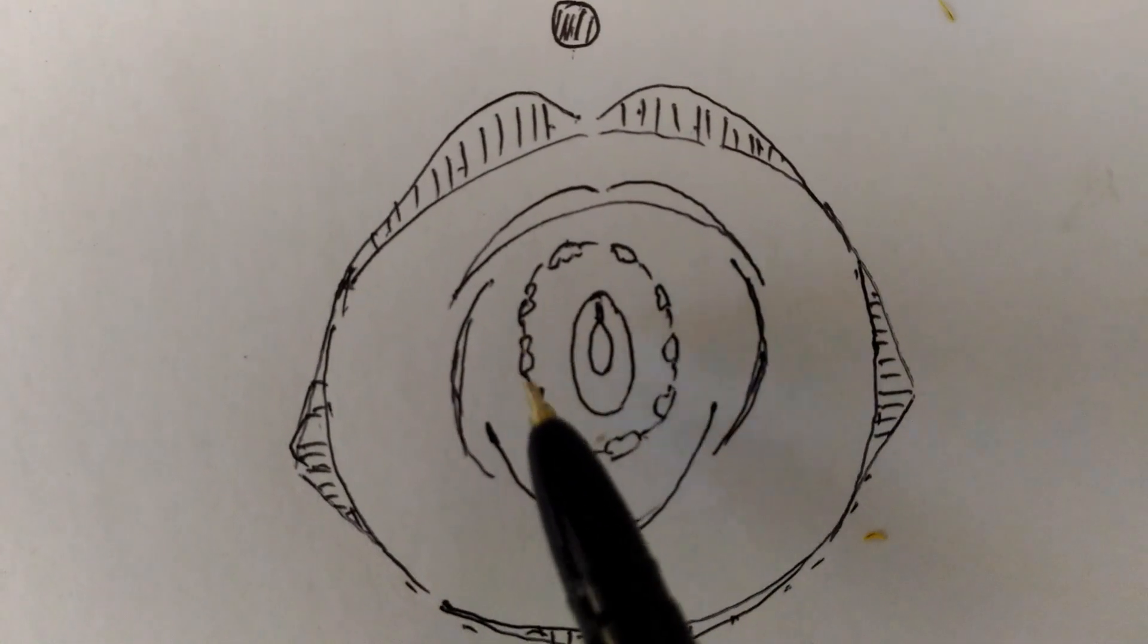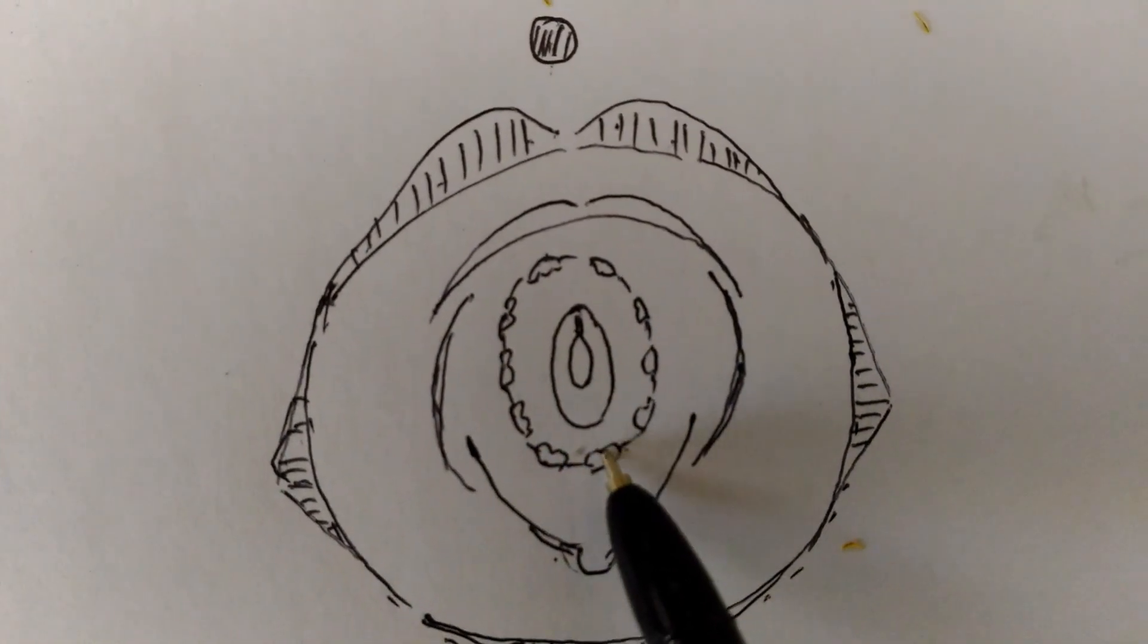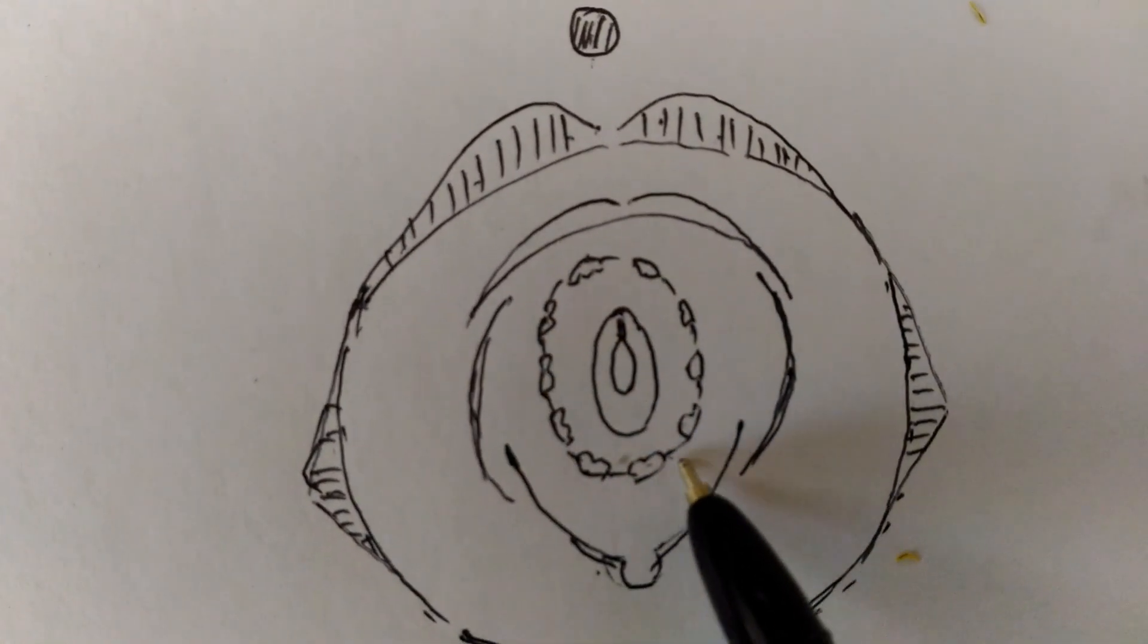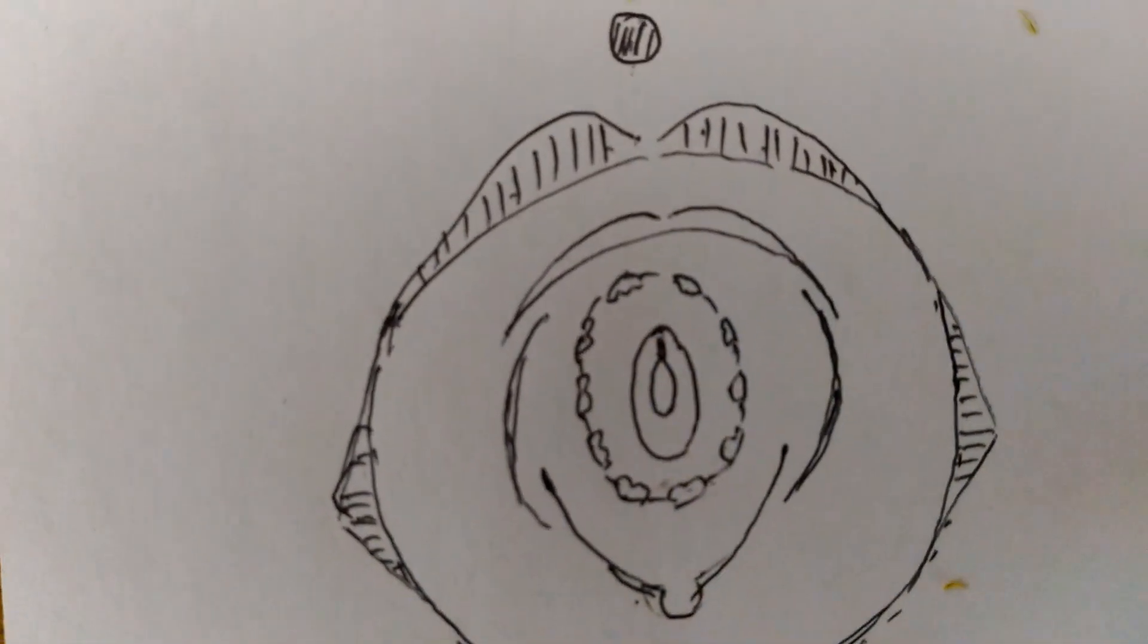These are the ten stamens. They are united in a bundle and form the monadelphous structure.